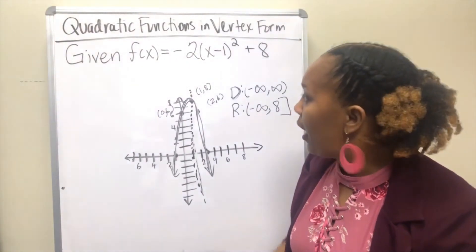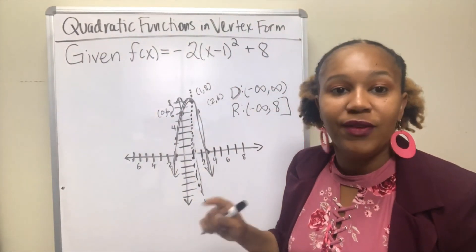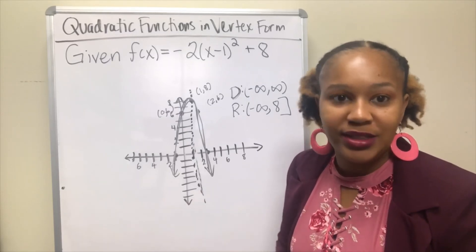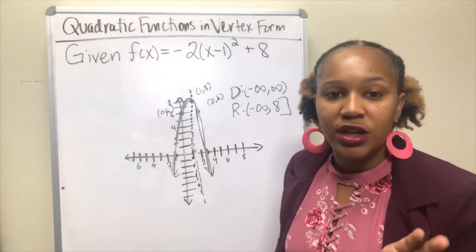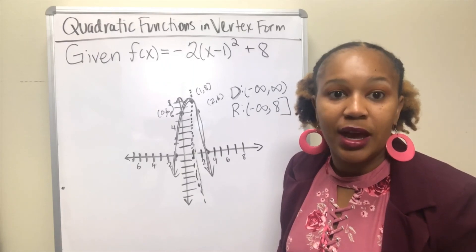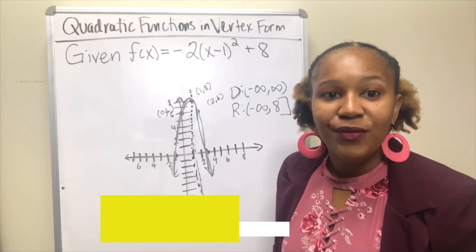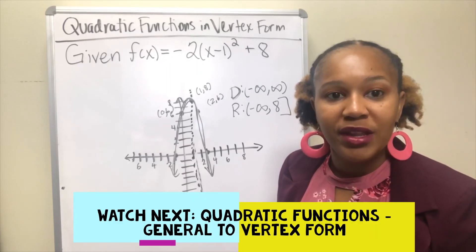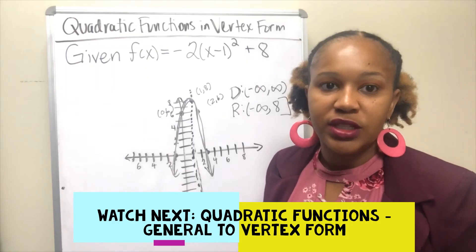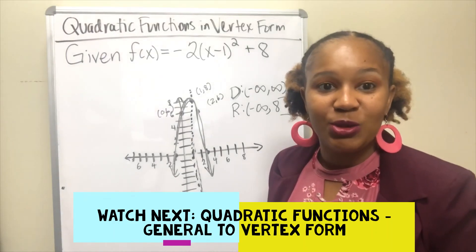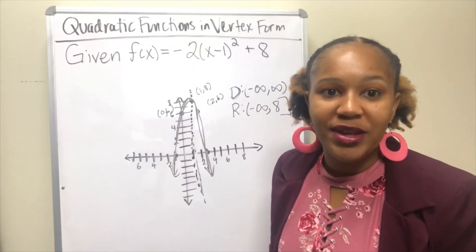That is how you analyze a quadratic function in vertex form: find the vertex, x-intercepts, y-intercept, axis of symmetry, domain and range, and sketch the graph. The vertex form of a quadratic function gives us a lot of information, which is why it's one of the preferred forms. If you're comfortable with this, check out the next video on how to convert a quadratic function from general form to vertex form — the link is in the description. Leave any questions in the comments below and make sure you hit the subscribe button.